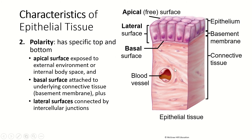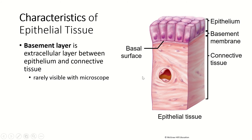The basal surface — the bottom — is attached to a basement membrane. The lateral surfaces of all the cells are connected to each other by intercellular junctions, which we'll talk about in the next section. The basement membrane is actually an extracellular layer secreted by the cells, and it attaches the basal surface of the epithelial cells to the connective tissue underneath.